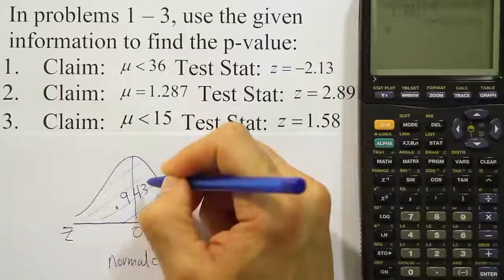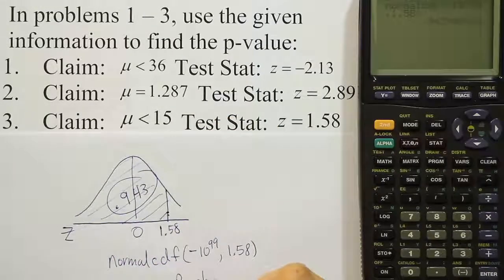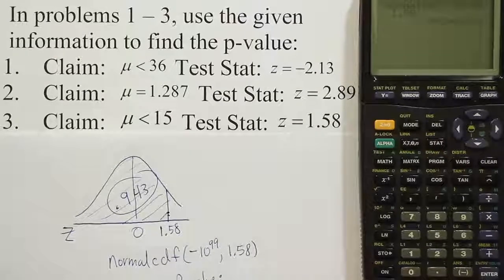So .943 is basically 94.3%. So the p-value is quite large. The p-value is 94.3%.